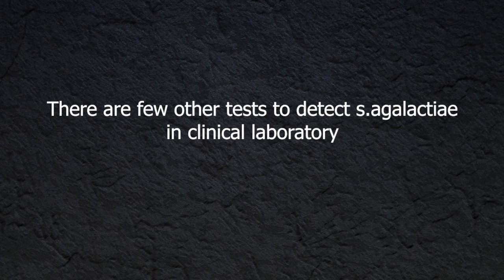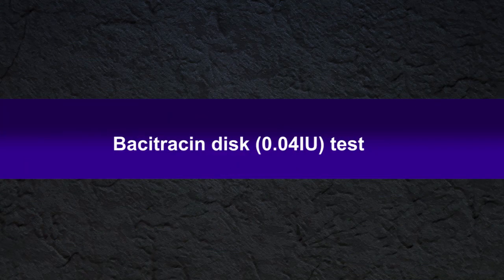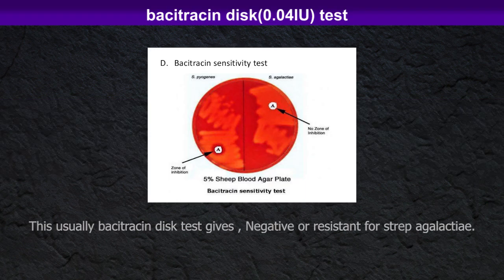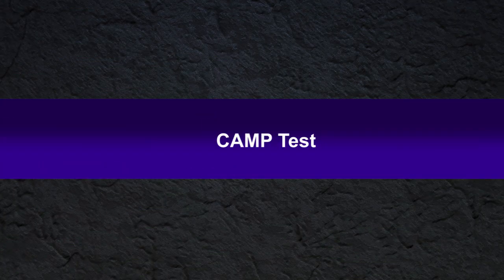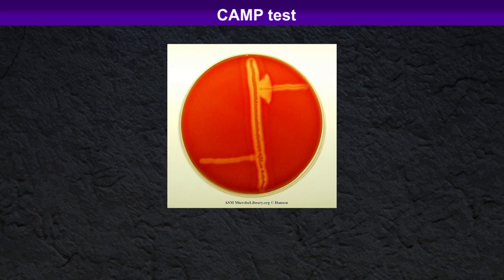The bacitracin test: Streptococcus agalactiae usually gives a negative result or resistance in the bacitracin test. However, five to ten percent of group B Streptococcus agalactiae can also give a positive result in the bacitracin test. The next test to perform is the CAMP test. Streptococcus agalactiae gives a positive result for the CAMP test.